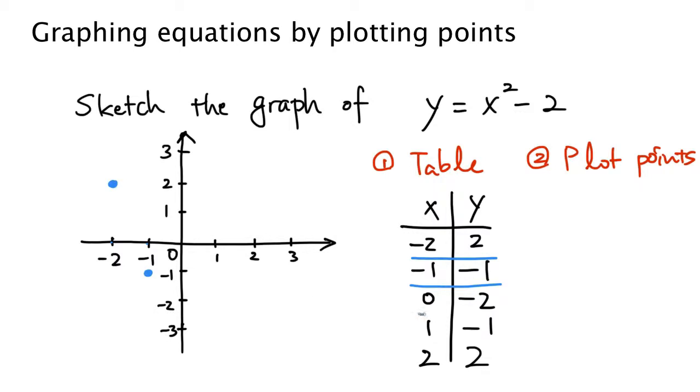Then the next pair of numbers, 0 comma negative 2. x is 0, y is negative 2. Here is the point. And the next point is at 1 comma negative 1, right here. And the last point is at 2 comma 2, right here.